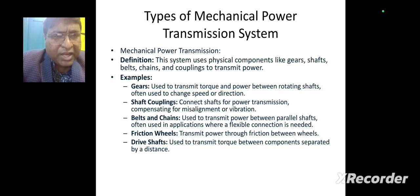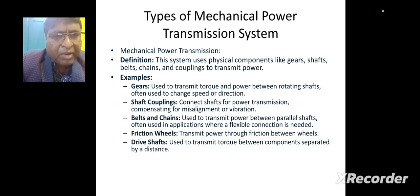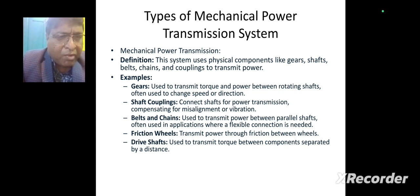There are different types of mechanical power transmission systems. These systems use mechanical components like gears, shafts, belts, chains, and couplings to transmit power. Gears transmit torque and power between rotating shafts, often used to change speed or direction. Shafts are used for power transmission, compensating for misalignment or vibration. Belt and chain drives transmit power between parallel shafts where a flexible connection is needed. Friction wheels transmit power through friction between wheels. Drive shafts transmit torque between components separated by a distance.